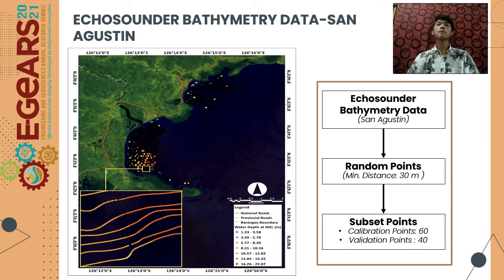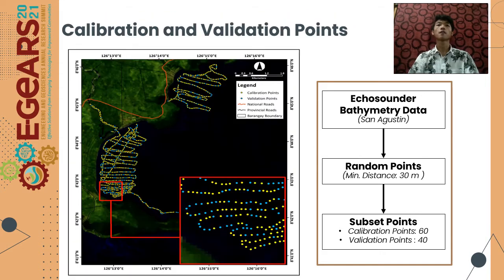In-situ bathymetry data was acquired by a single beam echo sounder in March 2016 as part of the project by CSU Field LiDAR 1. The in-situ data is dense, so points were randomly generated and ensured to be 30 meters away from each other. From these randomly generated points, 60% were used for calibration and 40% for validation. From a total of 30,293 points, it was reduced to 1,531 points with a depth range from 1.33 to 22.87 meters at mean sea level.